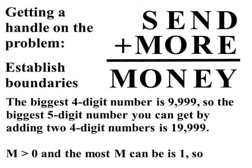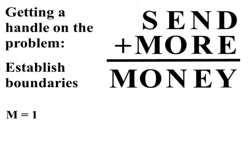So the biggest number M can be is one. And since we already know that M is greater than zero, that means M has to be one.